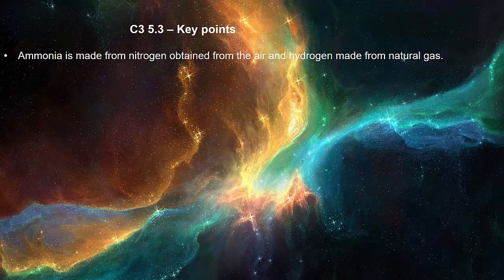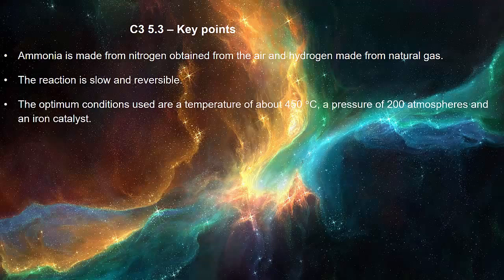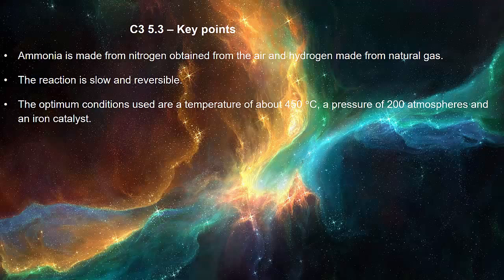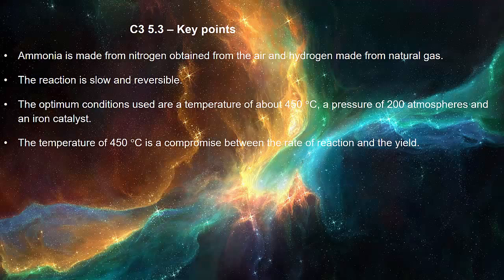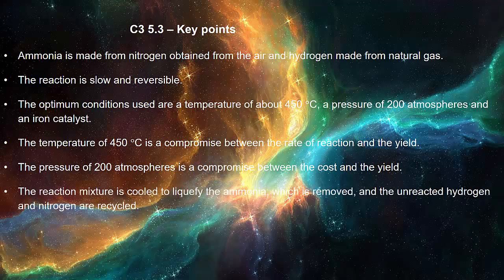Ammonia is made from nitrogen obtained from the air and hydrogen made from natural gas. The reaction is slow and reversible. The optimum conditions used are a temperature of about 450 degrees, a pressure of 200 atmospheres and an iron catalyst. The temperature of 450 degrees is a compromise between the rate of reaction and the yield. The pressure of 200 atmospheres is a compromise between the cost and the yield. The reaction mixture is cooled to liquefy the ammonia which is removed and the unreactive hydrogen and nitrogen are recycled.